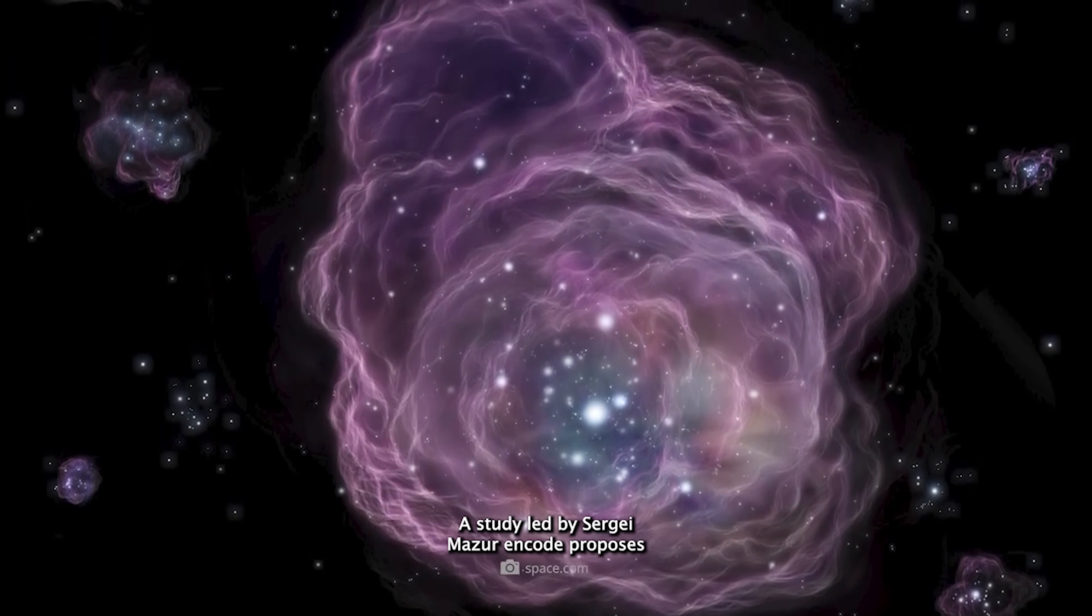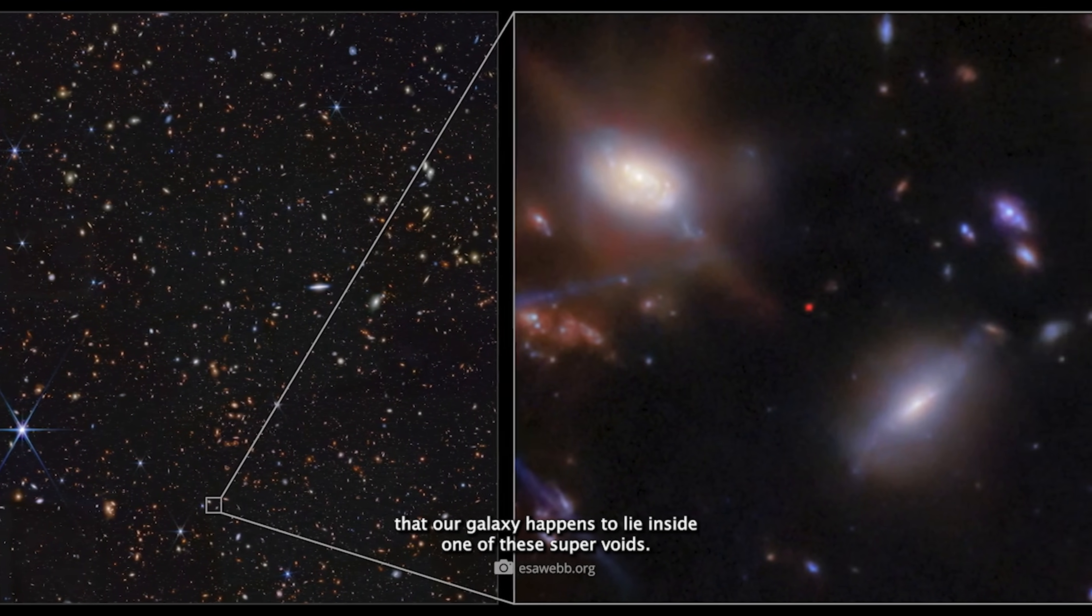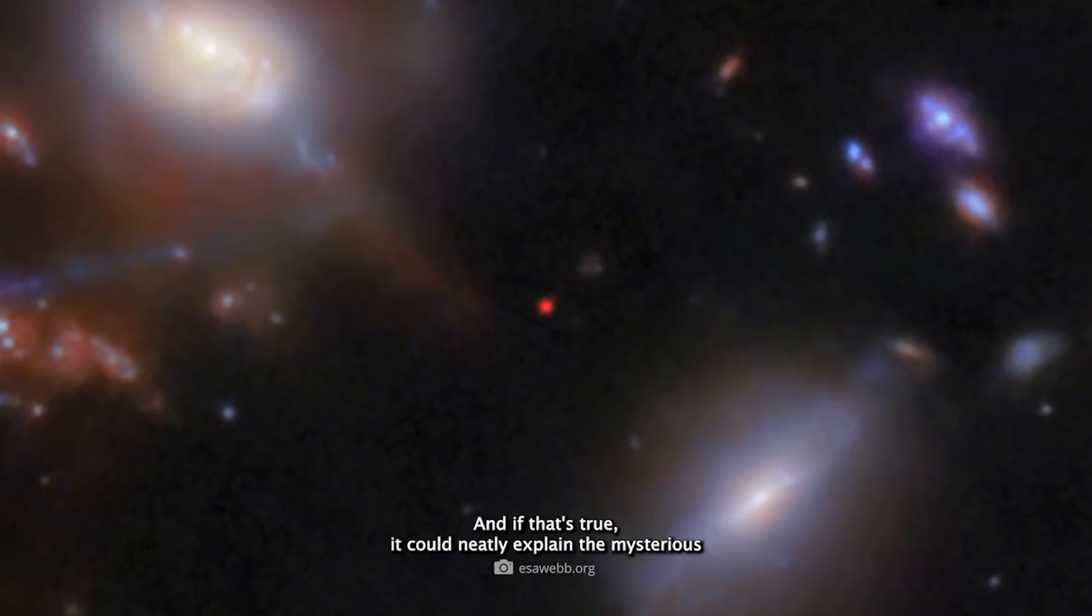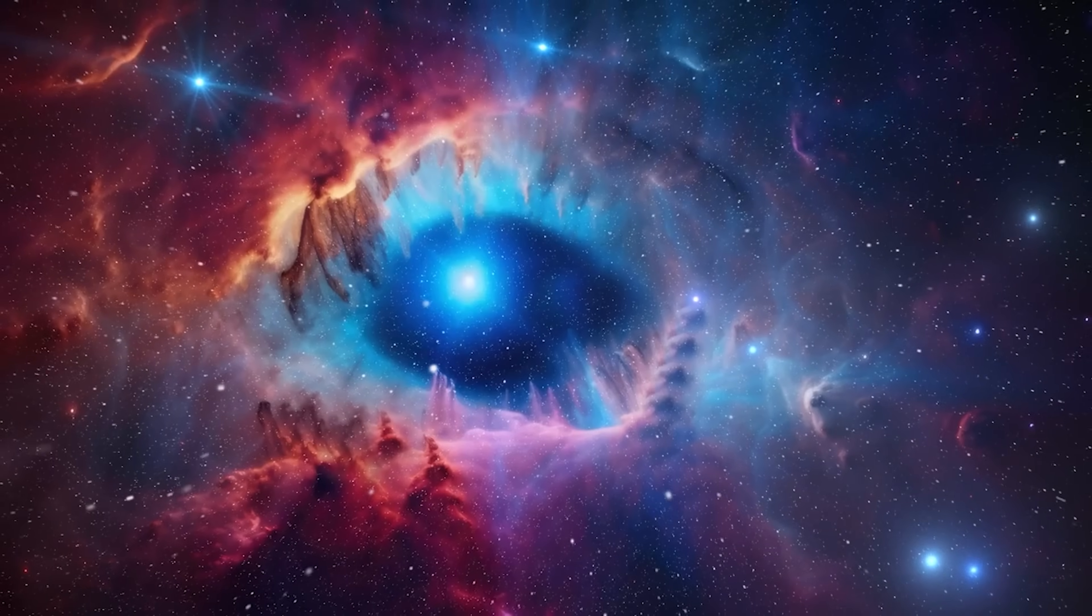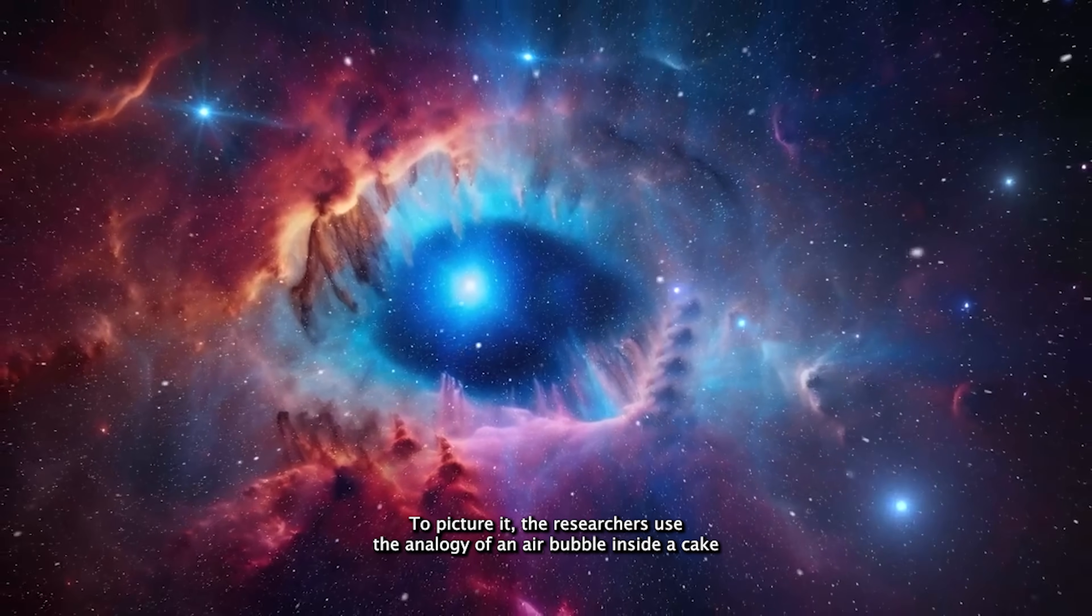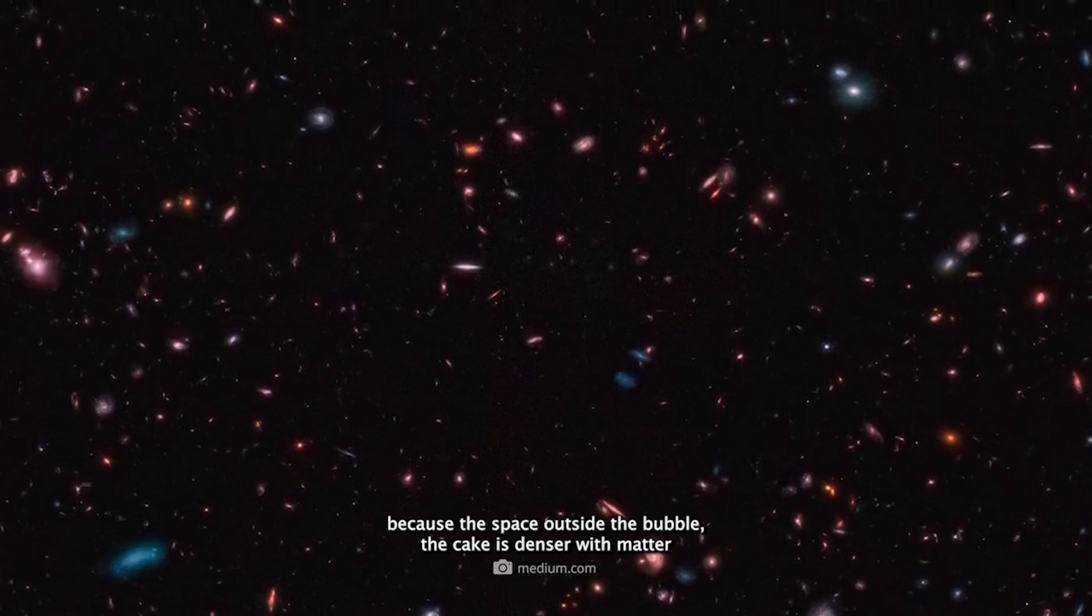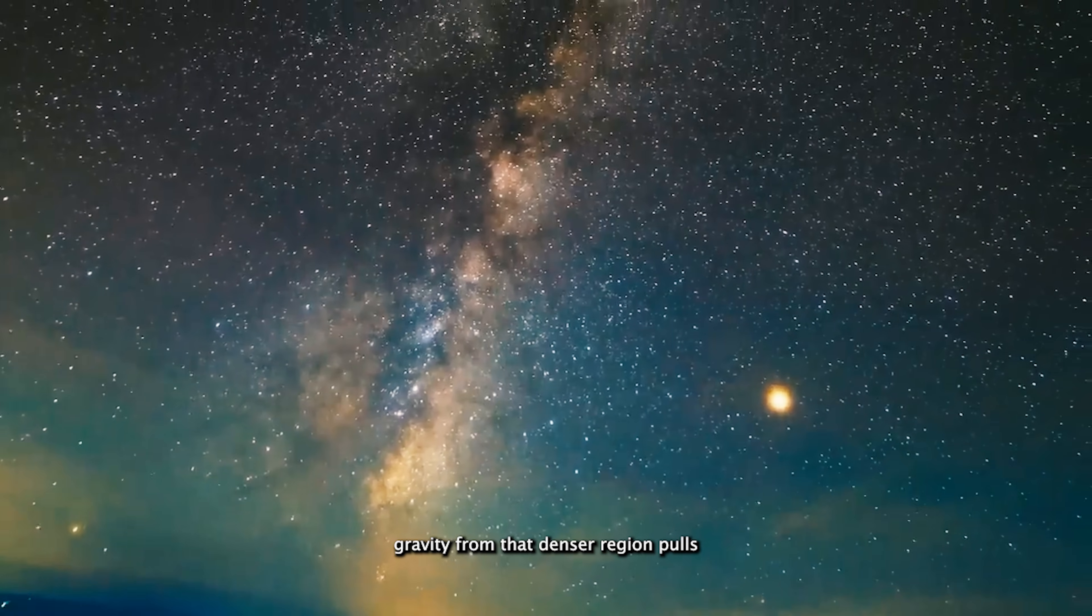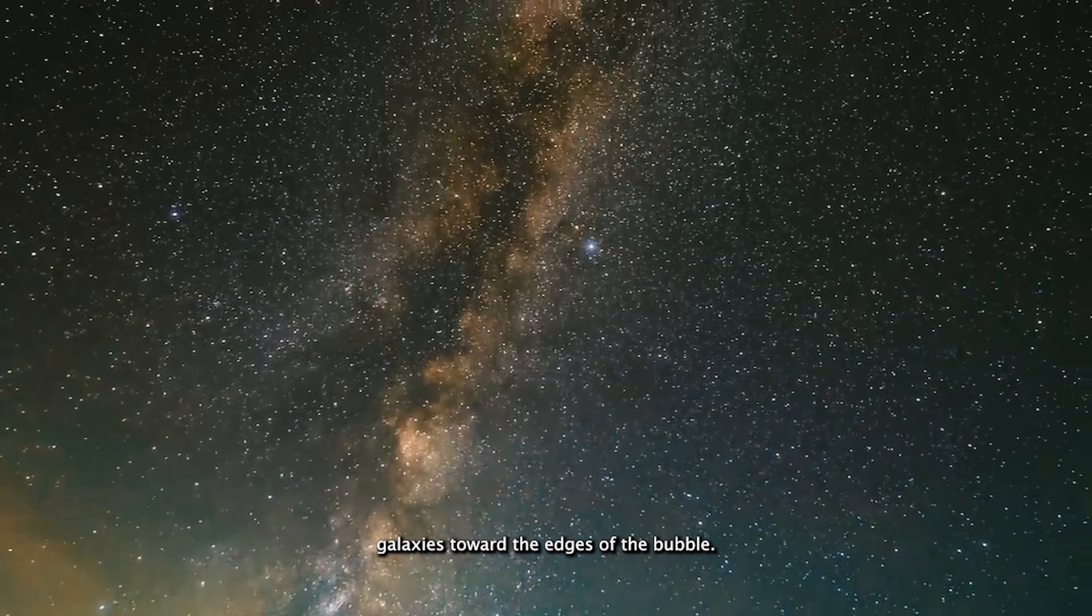A study led by Sergei Mazarenko proposes that our galaxy happens to lie inside one of these supervoids, and if that's true, it could neatly explain the mysterious discrepancy in the universe's expansion rate. To picture it, the researchers use the analogy of an air bubble inside a cake. Because the space outside the bubble, the cake, is denser with matter, gravity from that denser region pulls galaxies toward the edges of the bubble.